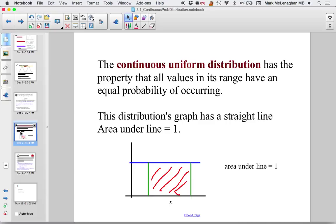It has the property that all values in the range have equal probability of occurring. The distribution graph has a straight line. Area under the line is equal to 1 for a fixed interval. We're talking about the interval between the two green lines.